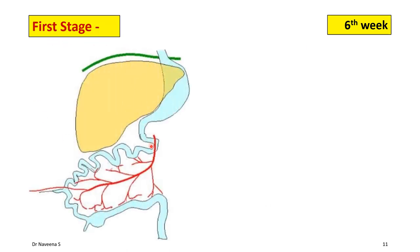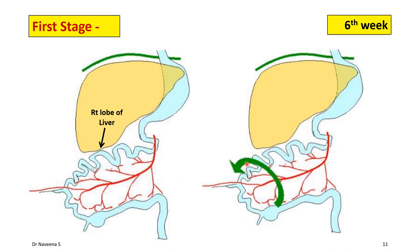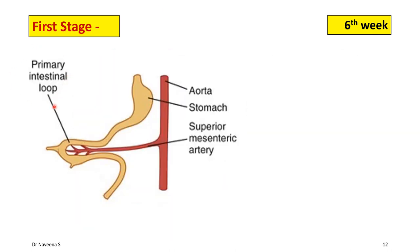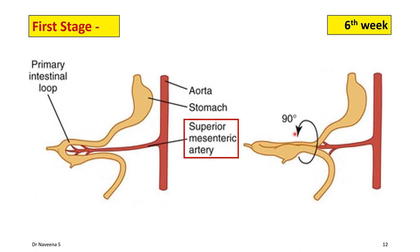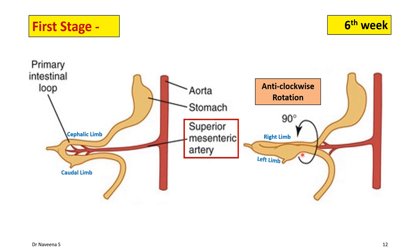During the first stage, the cephalic limb of the midgut loop grows enormously compared to the caudal limb. Its proximal part lying in the abdominal cavity is pushed downwards by the growing right lobe of the liver, so the cephalic limb starts rotating downwards towards the right side. Consequently, the caudal limb moves upwards towards the left side. The primary intestinal loop starts rotating towards the right side around the superior mesenteric artery as an axis. The rotation is 90 degrees towards the right side, which is anti-clockwise when viewed from ventrally, so the cephalic limb becomes the right limb and the caudal limb becomes the left limb.